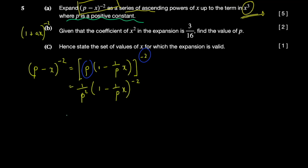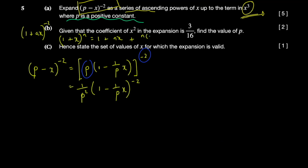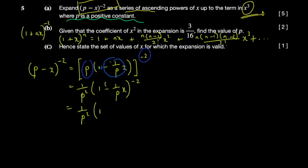The binomial expansion states: (1 + x)^n = 1 + nx + [n(n-1)/2!]x² + [n(n-1)(n-2)/3!]x³ + ... We go up to the x³ term. Here n = -2, and our x is replaced by (-1/p)x throughout.